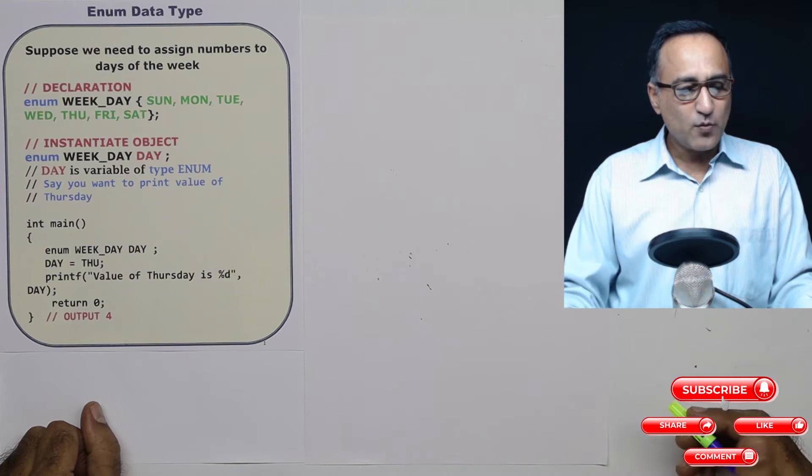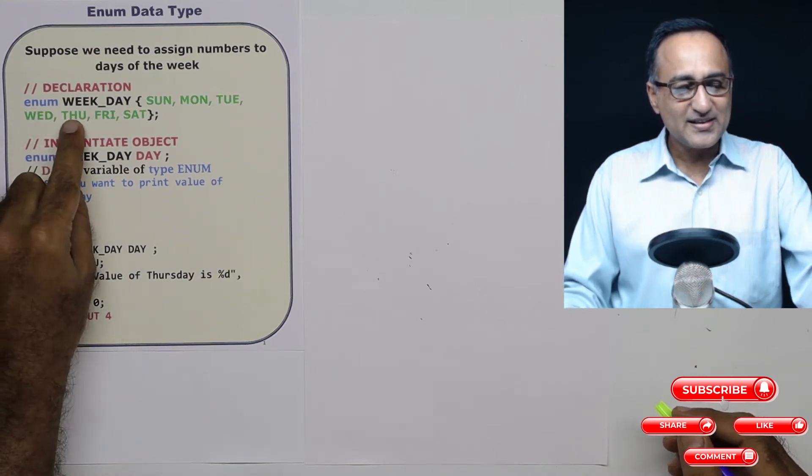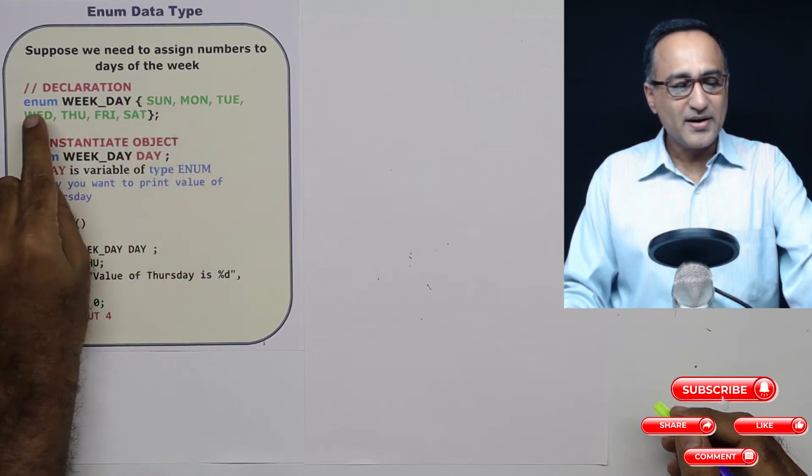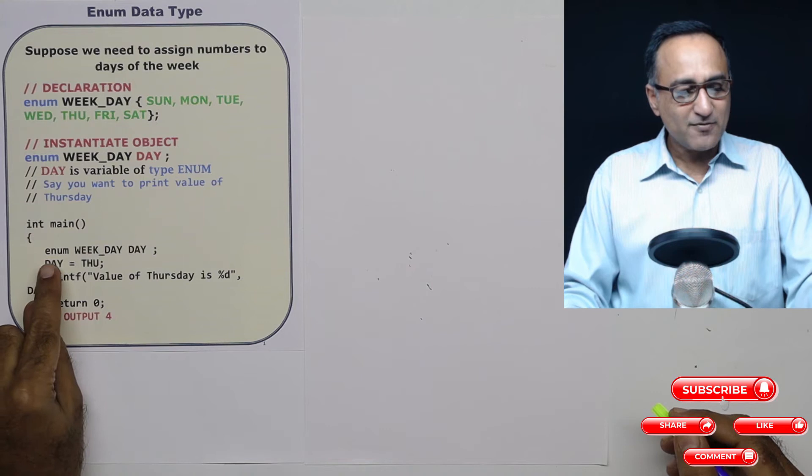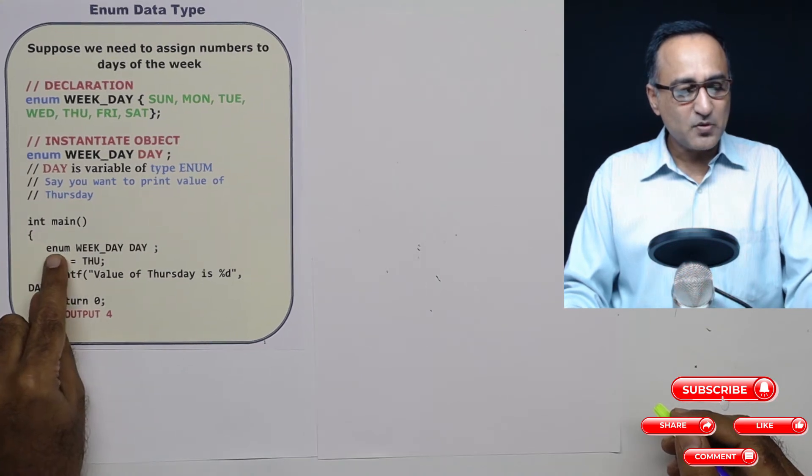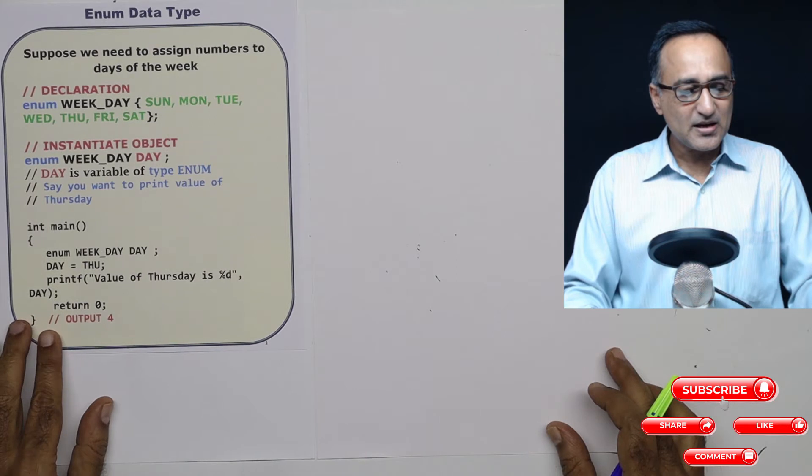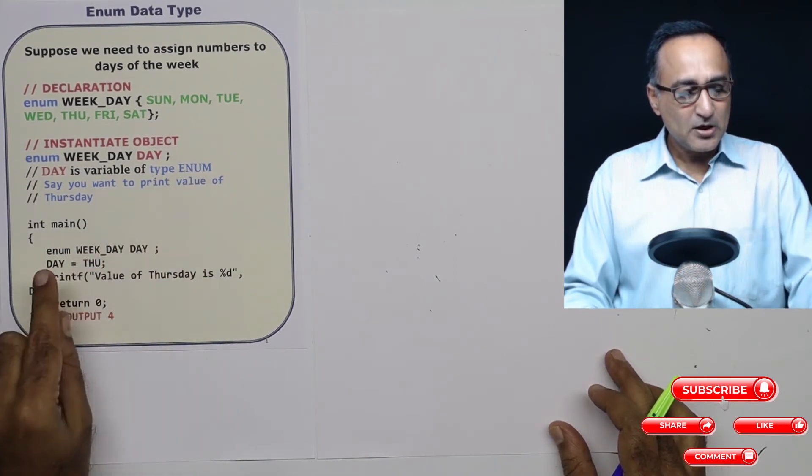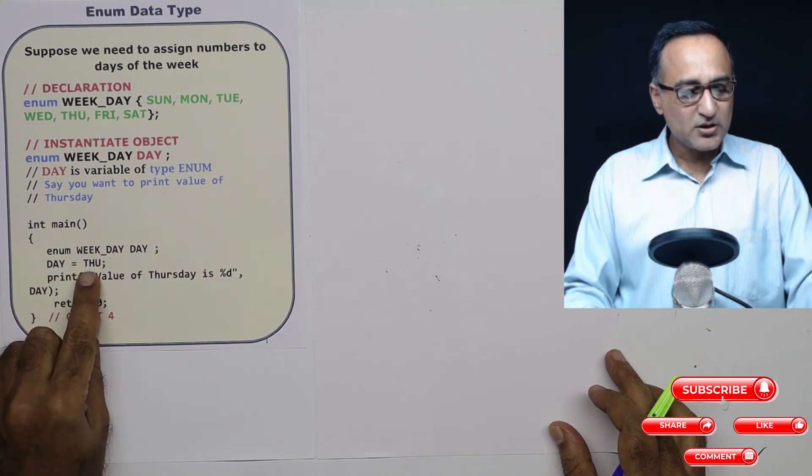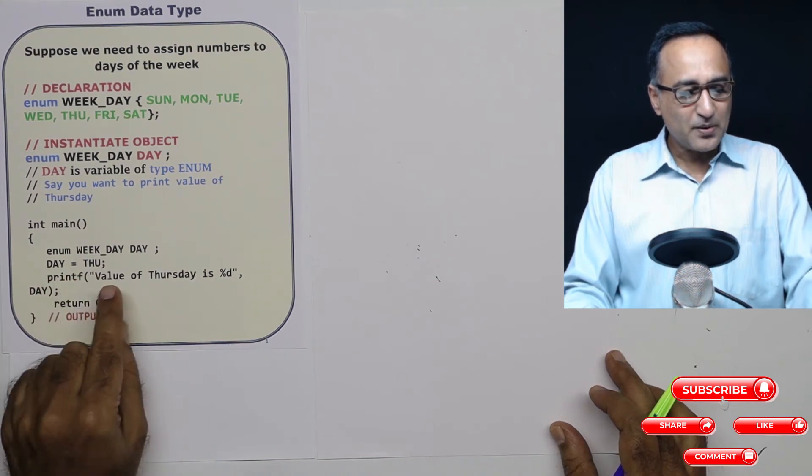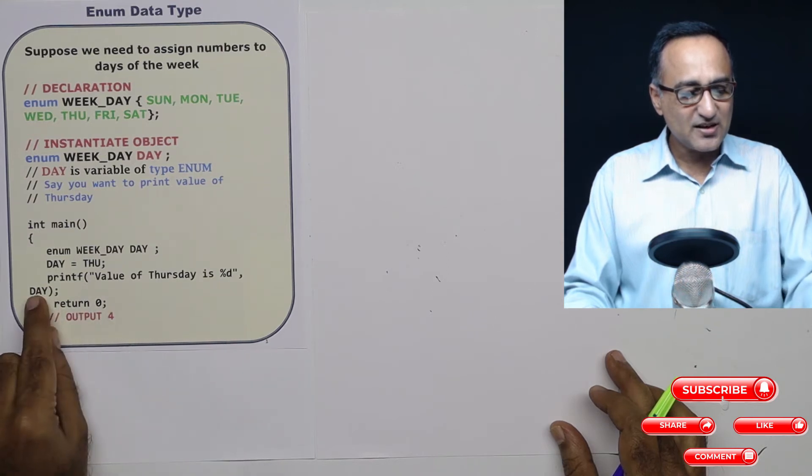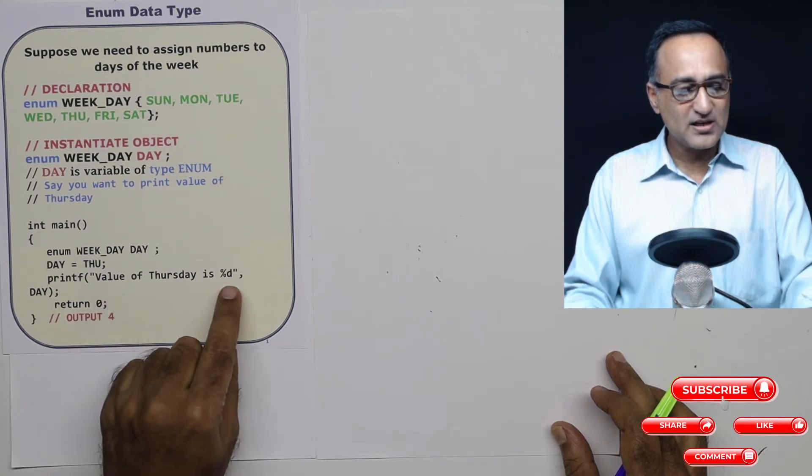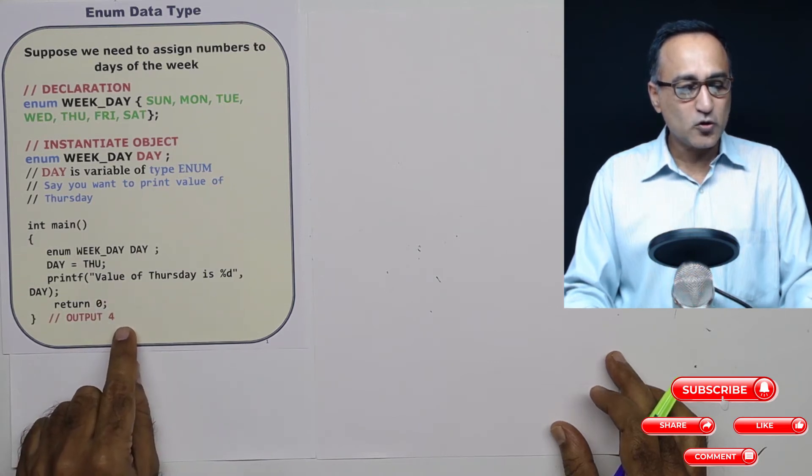Let us say I want to print what is the value contained in Thursday. So according to me, it should be 0, 1, 2, 3 and 4. So what I'm doing in the main function is I am declaring enum weekday day. I am declaring enum weekday day. So day is a variable of the type enum. Now when I say day is equal to Thursday, and if I say printf value of Thursday is %d day, it is going to print 4. It is going to say value of Thursday is 4. So the output is going to be 4.